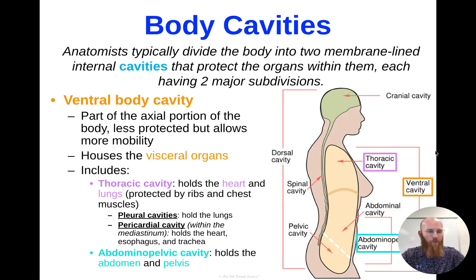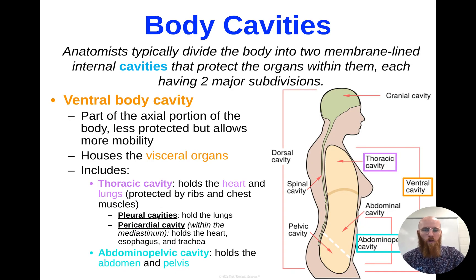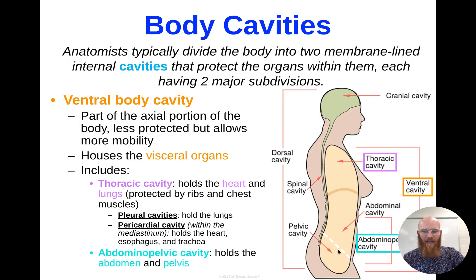On our front side or ventral side, we have the ventral cavity. This is the part that is less protected but allows for more mobility. Our visceral organs can be found here — things like your heart, your lungs, and all of your digestive system organs. Sectioned in pink here, we have our thoracic cavity, which holds the heart and lungs, protected by your ribs and chest muscles. Your pleural cavities hold your lungs. The pericardial cavity — anytime you see cardia or cardio, that refers to your heart — is within the mediastinum, and it also contains your esophagus and trachea. Then we have your abdominal pelvic cavity, which has your abdomen and your pelvis.